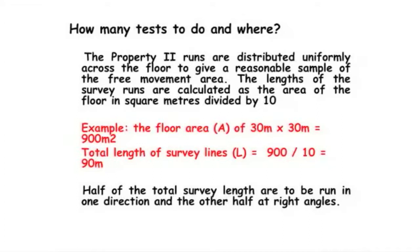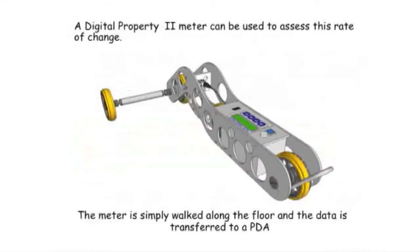Half of the runs need to go in a north-south direction and half east-west. The same clever people who invented the profilograph invented a gadget called a Property Two reader — it half looks like a profilograph but it isn't. It's not driven, it's towed, and it collects information that is downloaded.